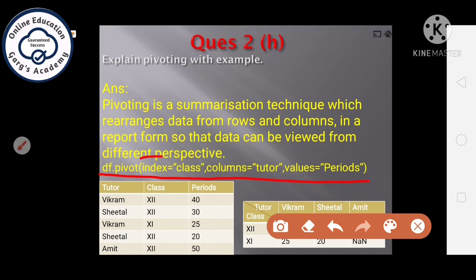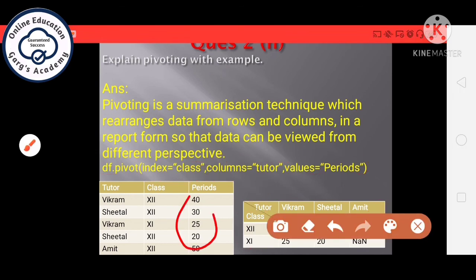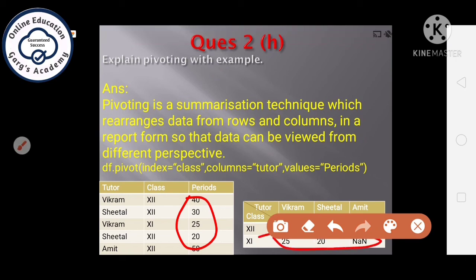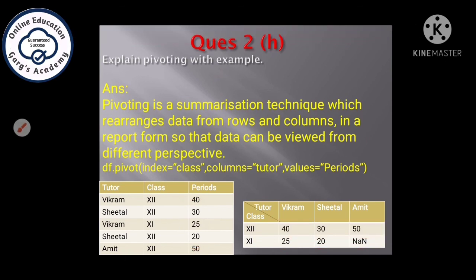How it will work? If we will write index equal to classes, means it will make this as index. If we will write column equal to tutor, means name of the tutors will become as the columns and values equal to periods, means these values will become the values of this perspective. Here, you can see if Mr. Amit is not taking plus 1 class, then NaN will be inserted in this column.